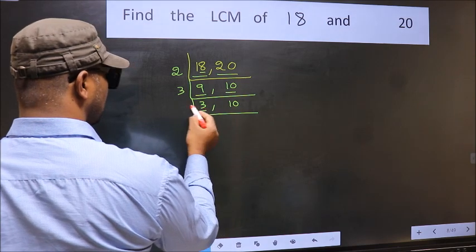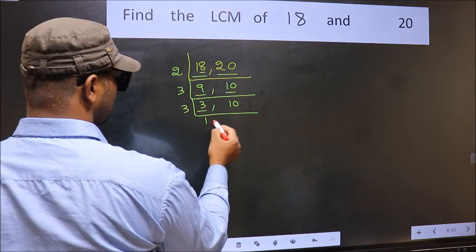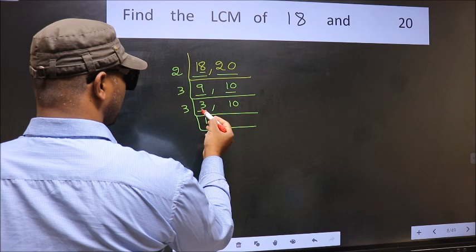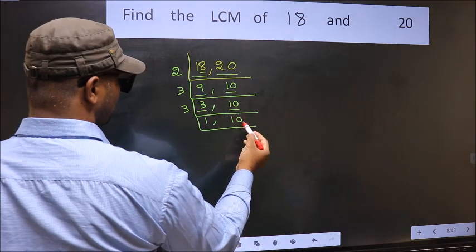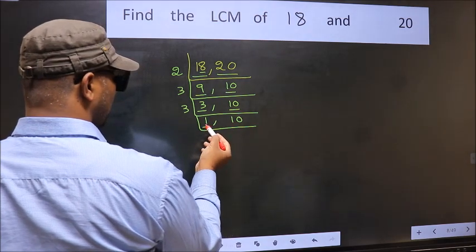Now here we have 3. 3 is a prime number so 3 once is 3. The other number 10 not divisible by 3 so we write it down as it is. Now we got 1 here.